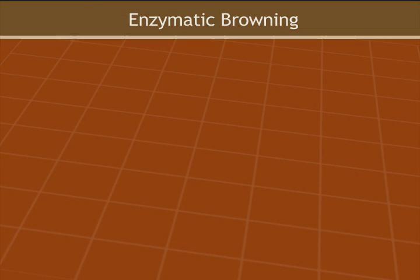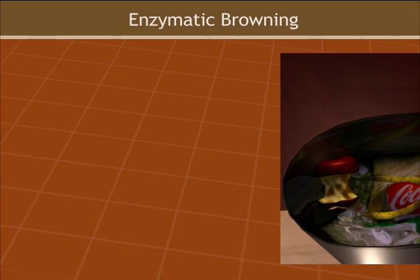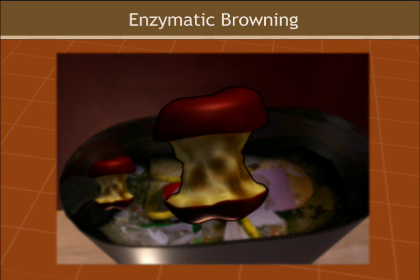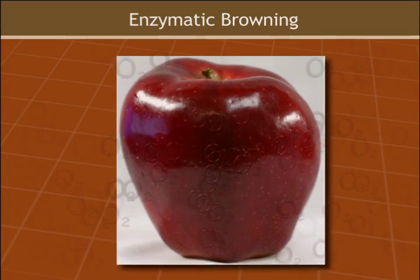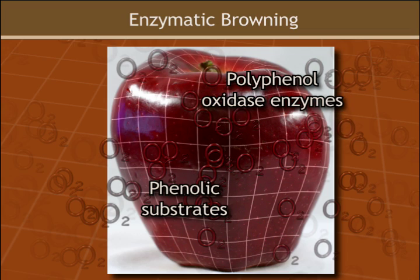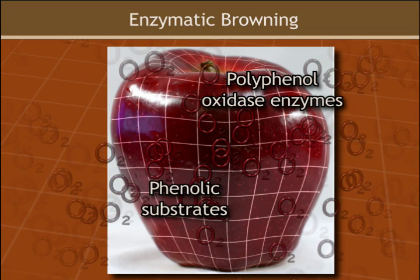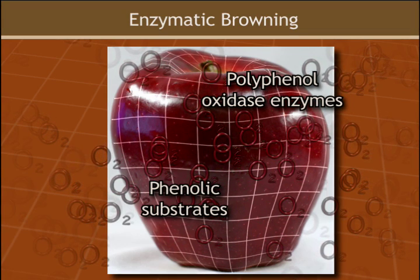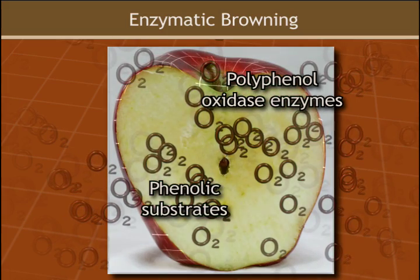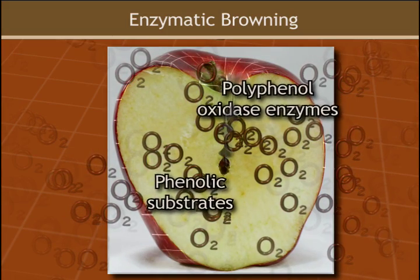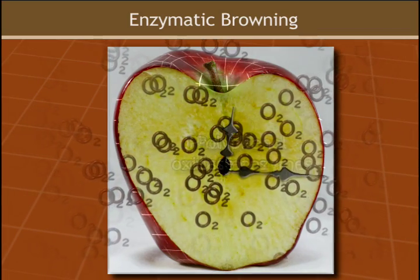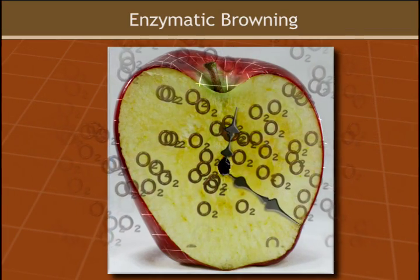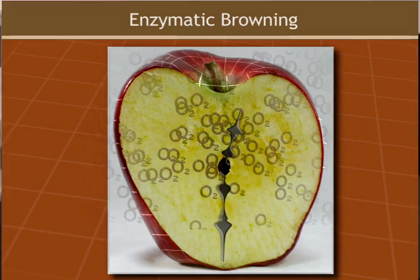Let's take a look at enzymatic browning. Enzymatic browning is an undesirable reaction that is responsible for the discoloration observed in some fresh-cut fruits and vegetables. Normally, the fruit or vegetable cell structure separates the phenolic substrates from the polyphenoloxidase enzymes. However, when the fruit or vegetable is cut or bruised, the phenolic substrates and the polyphenoloxidase enzymes can come together and react in the presence of oxygen over time to produce undesirable brown-colored compounds.